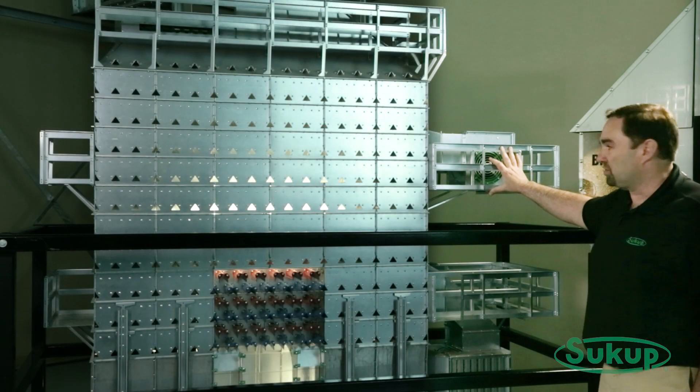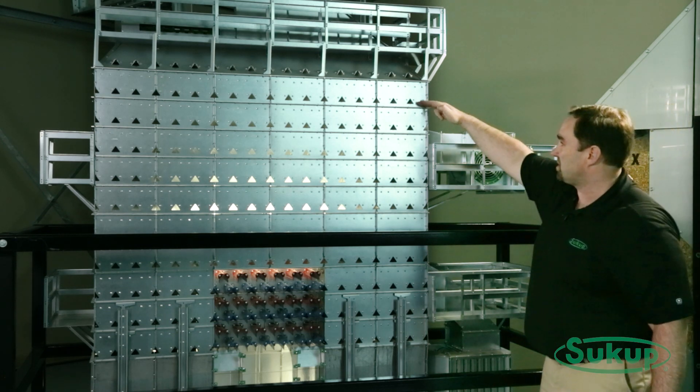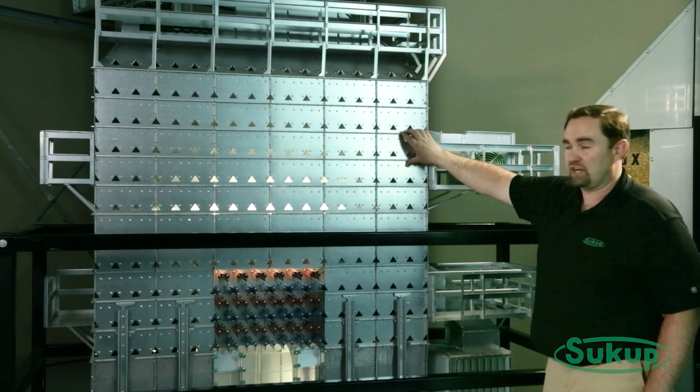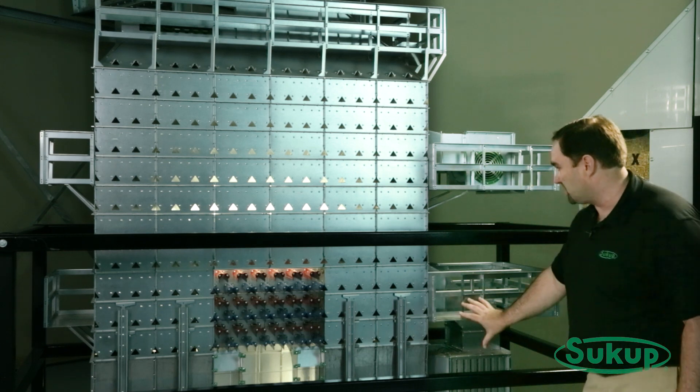The upper fans on our mixed flow dryers are full heat units only. So the upper fans will blow into the top four tiers of mixed flow drying chamber. And it's a divided chamber, so we can run a separate temperature up here than what we run down here.